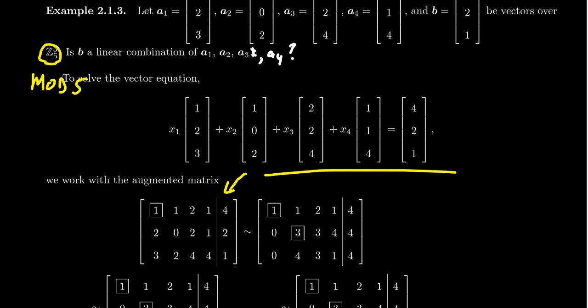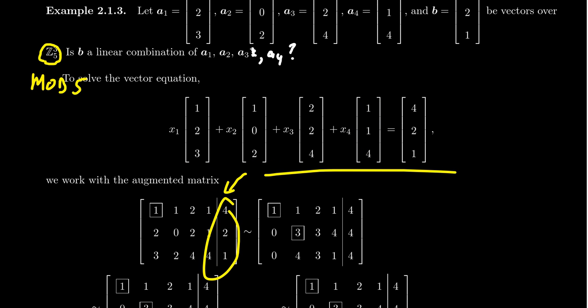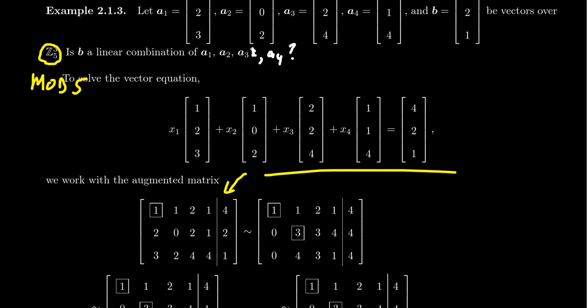Solving this vector equation is equivalent to working with an augmented matrix whose first column is the first vector, second column is the second vector, third column is the third vector, fourth column is the fourth vector. The columns of the coefficient matrix are the vectors to be linearly combined, and the last column is the vector B we're trying to produce. We want to solve the linear system associated to this matrix.